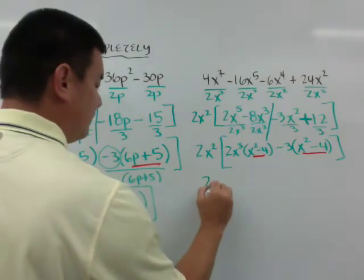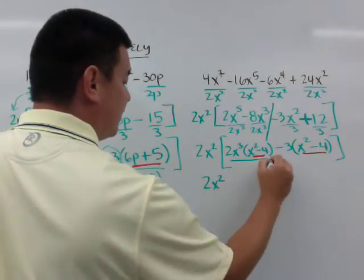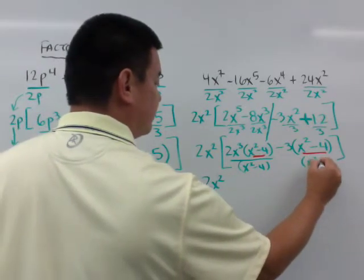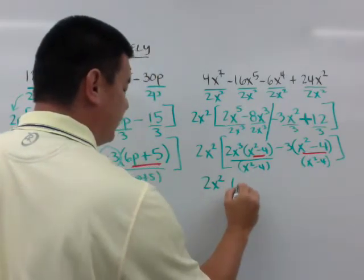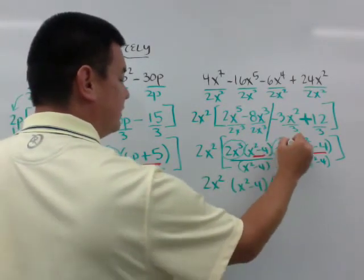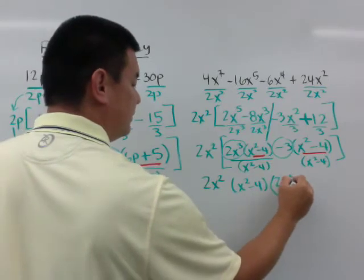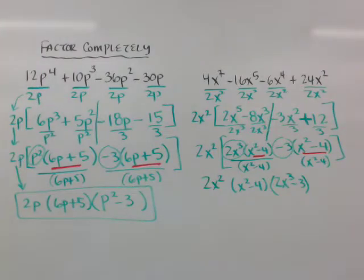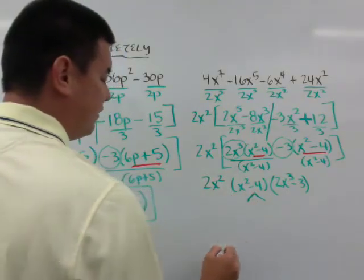So I'm going to drop down my 2x squared. I'm going to factor out my x squared minus 4, and then drop down what's left — 2x cubed minus 3. But I'm not done yet. It says factor completely. And if you look at that, what else can you factor? If you saw the difference of squares, you are correct.